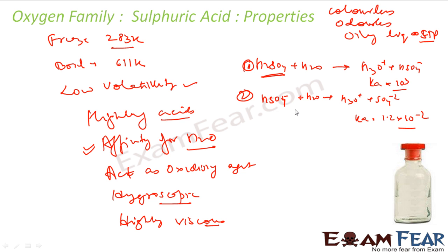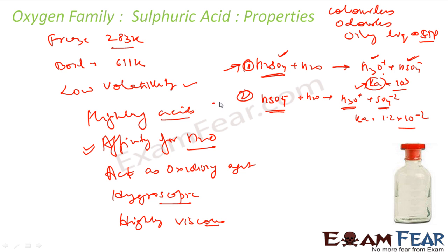In the first reaction, almost all HSO₄ molecules dissociate into hydronium ions and HSO₄⁻ ions. But in the second case, maybe only 20–30% of HSO₄⁻ will dissociate to hydronium ions and SO₄²⁻ ions. A large Ka value means more acidic character — more dissociation, more acidity. So H₂SO₄ is a stronger acid than HSO₄⁻.